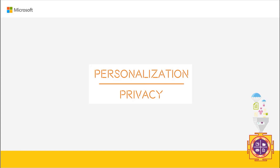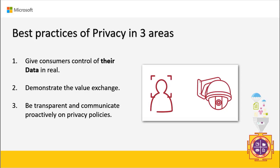There is one more important concept to discuss: privacy. When personalization is involved, every customer also thinks about privacy. Striking the balance between personalization and privacy is important for retailers when engaging with customers. Three best practices for retailers are: give customers control of their data and demonstrate the value exchange — showing what's in it for customers and retailers — and be transparent and communicate proactively on privacy policies.